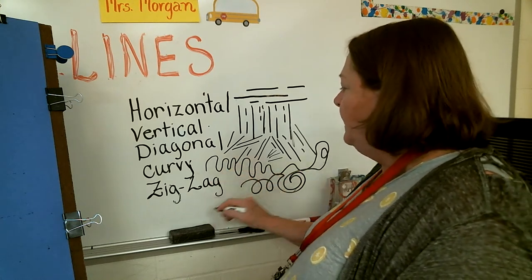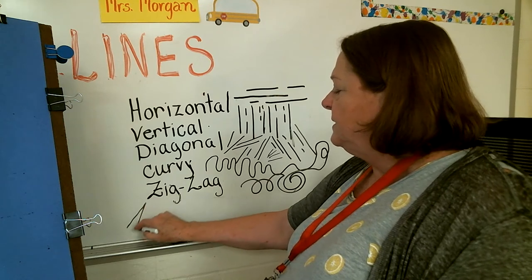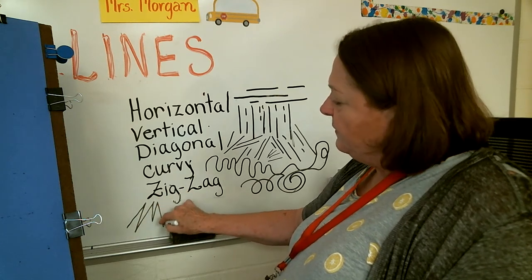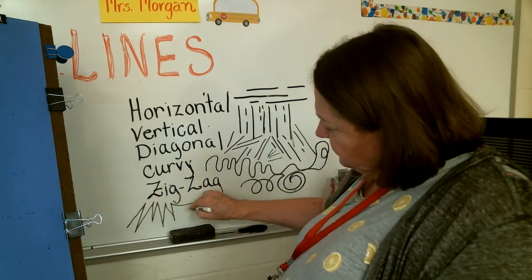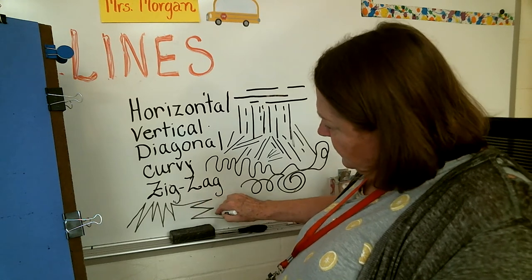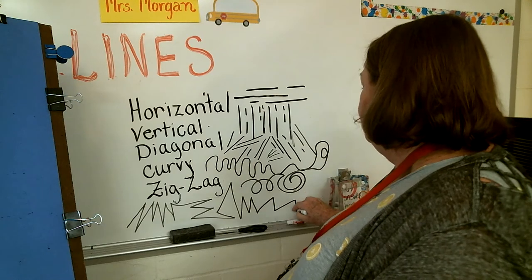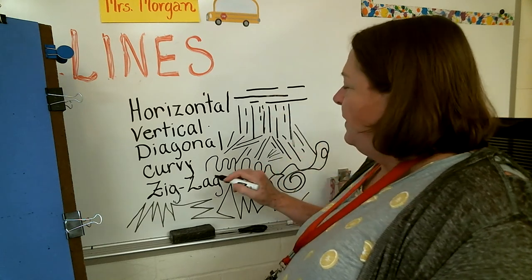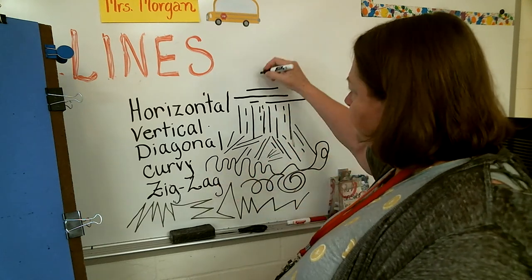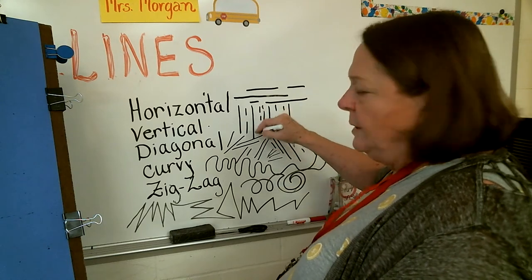So all those are curved lines. And the zigzag lines are made up of some of the directionals. So those can go lots of different ways with the straight lines.